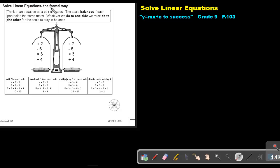Solve linear equations the formal way. Think of an equation as a pair of scales. The scale balances if each pan holds the same mass. Whatever we do on one side, we must do to the other for the scale to stay in balance.